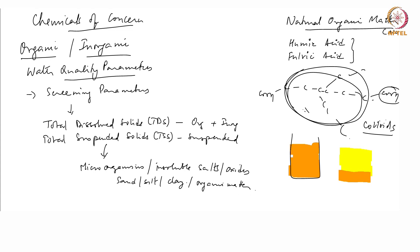Colloids are particles below a certain size — defined in some places as 0.45 microns, in others as 0.2 microns; the exact definition is not critical. What is important is that many colloids are charged, they do not like to settle down, they move around, and in different conditions they will aggregate. A lot of organic carbon can be considered as colloids.